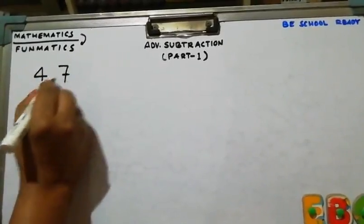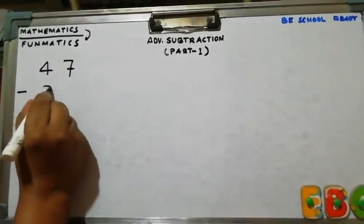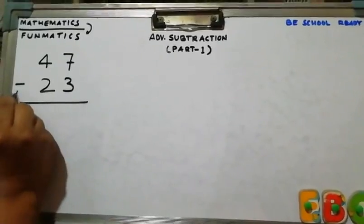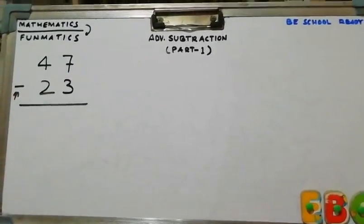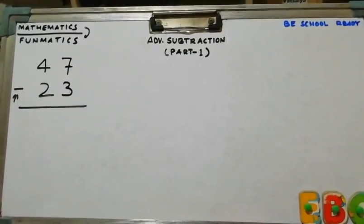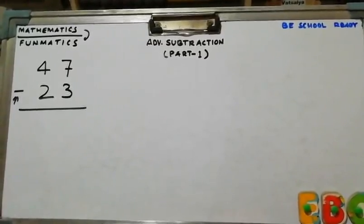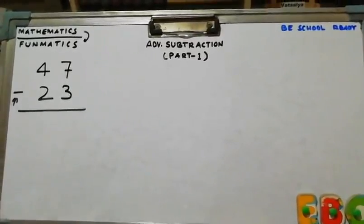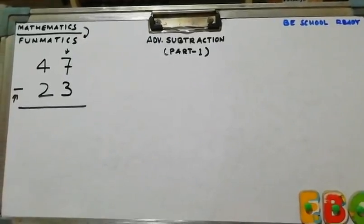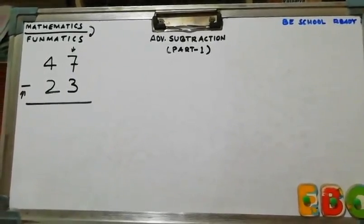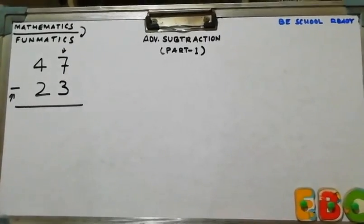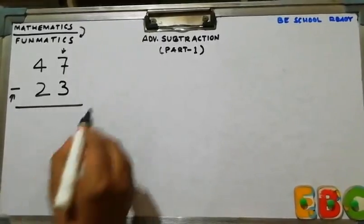47 minus 23. This is the symbol of subtraction, or simply we say minus. So, first step is that we have to put our pointer at the units place and show the first number's units place on the number line.